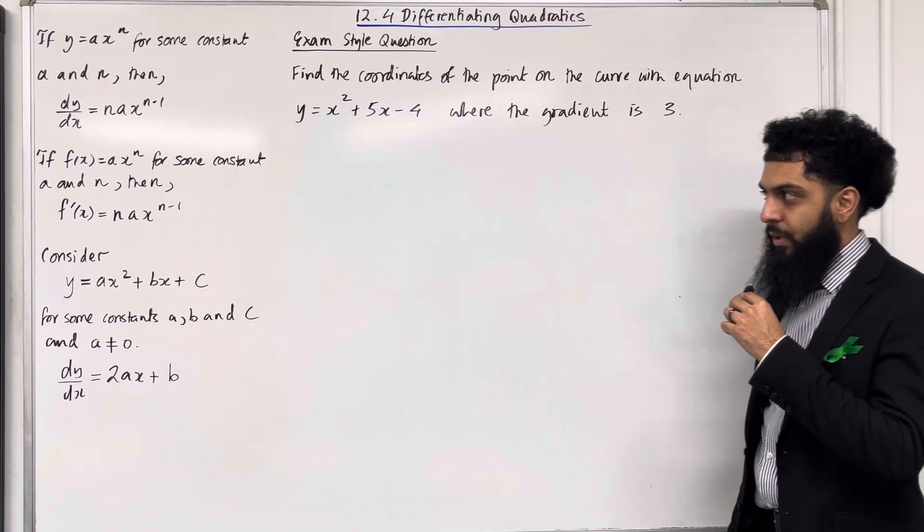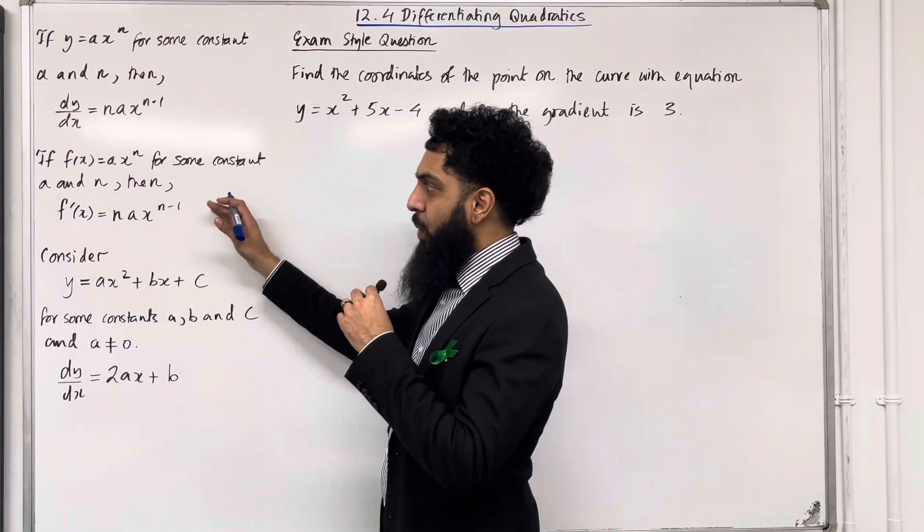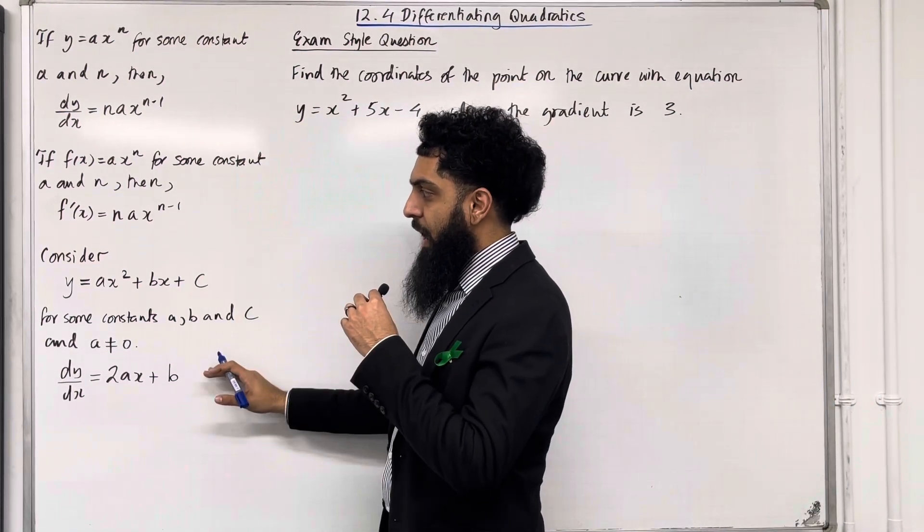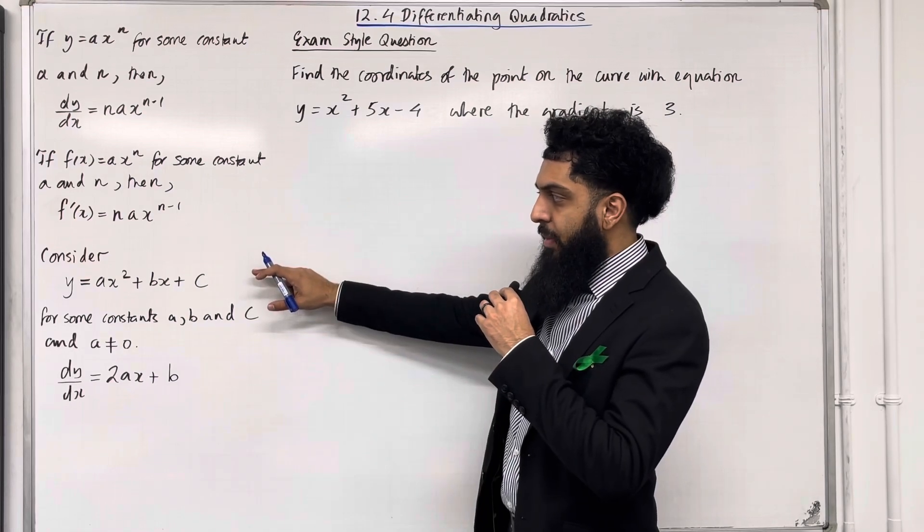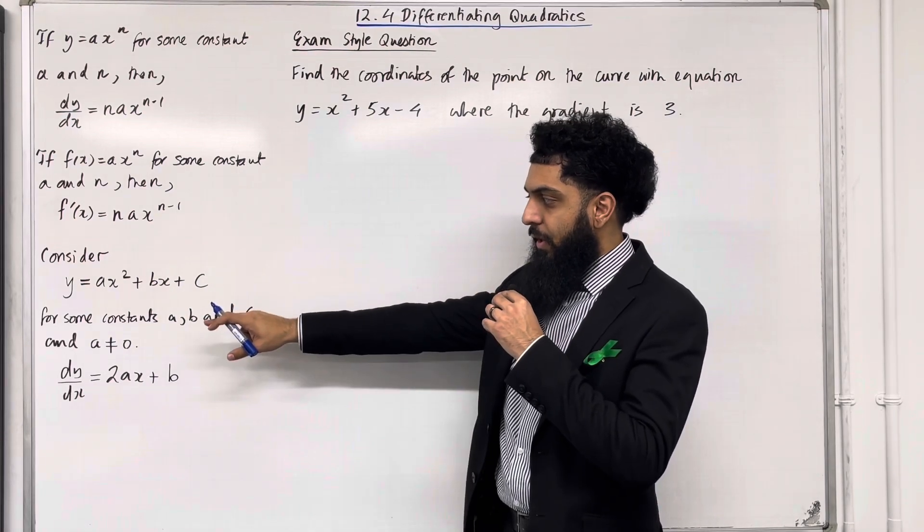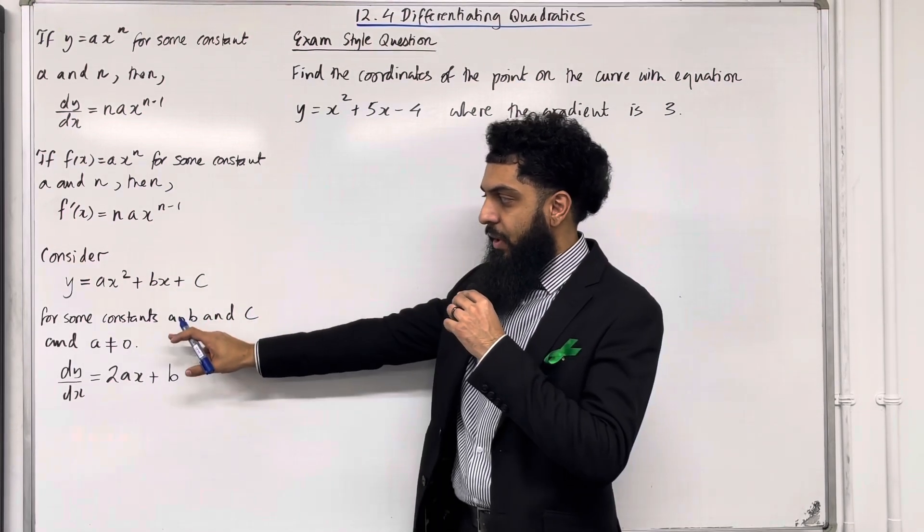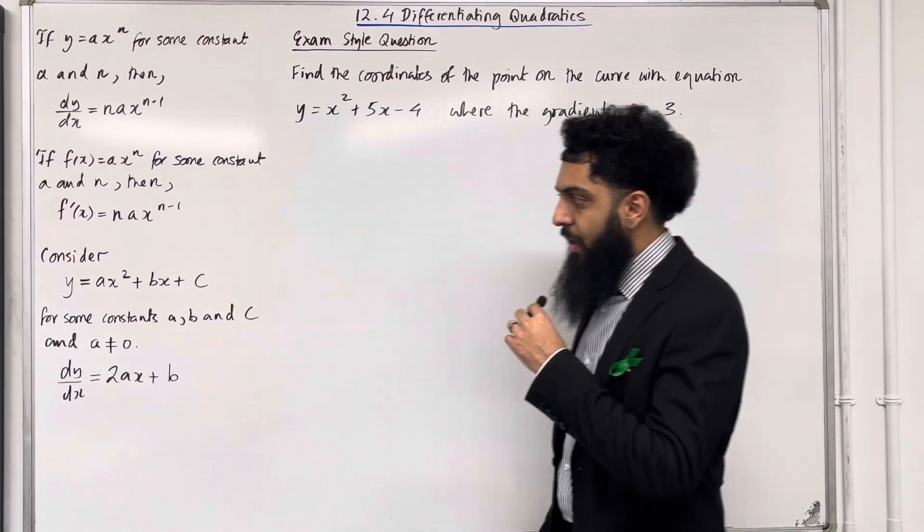Let's go through the key facts of this section. This key fact over here was covered in 12.3. Let's have a look at this. Consider the quadratic equation y equals ax squared plus bx plus c, for some constants a, b and c, where a is not equal to 0.